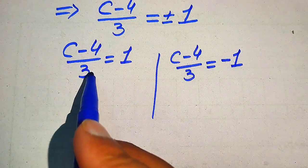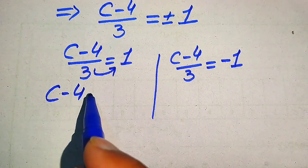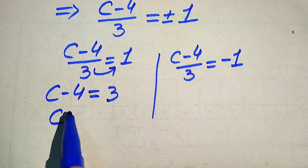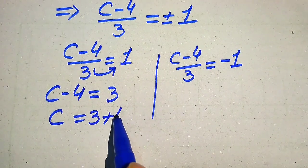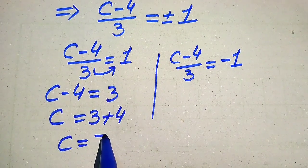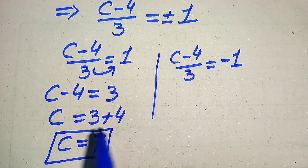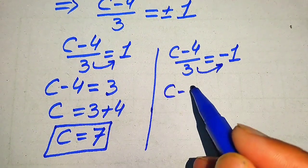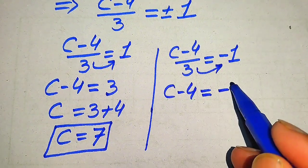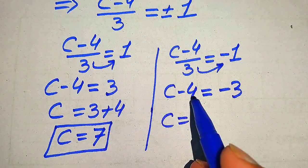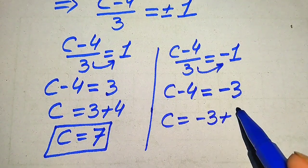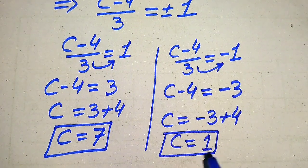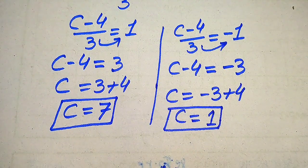For the positive case, moving 3 to the right gives C minus 4 equals 3 times 1 equals 3, then moving minus 4 gives C equals 3 plus 4, so C equals 7. For the negative case, C minus 4 equals 3 times minus 1 equals minus 3, then C equals minus 3 plus 4, so C equals 1. Both methods give the same roots.